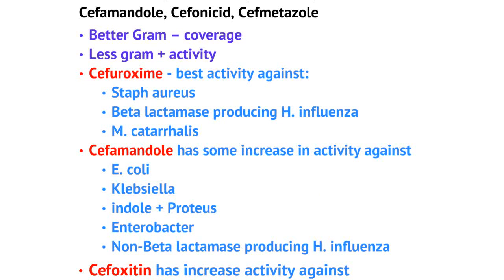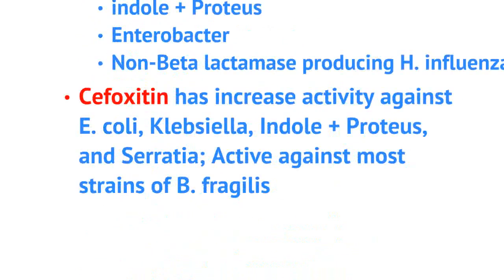Cefuroxime has activity against Staph aureus, beta-lactamase producing Haemophilus influenzae, and Moraxella. Cefamandole has increased activity against E. coli, Klebsiella, Proteus, Enterobacter, as well as non-beta-lactamase Haemophilus. Cefoxitin has increased activity against E. coli, Klebsiella, Proteus, and Serratia, as well as activity against most strains of Bacteroides fragilis.